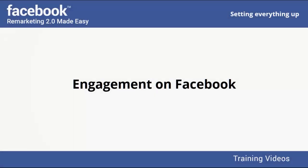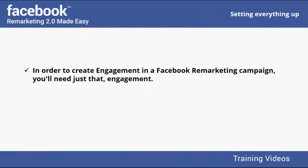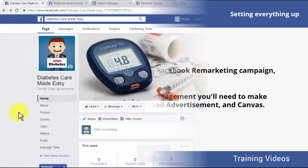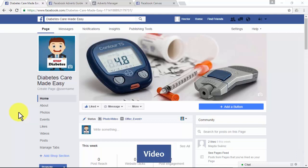To create engagement in a Facebook remarketing campaign, you'll need just that — engagement. There are three different types of engagement you'll need to make sure you get in Facebook: video, lead advertisement, and canvas.